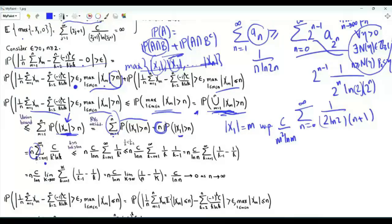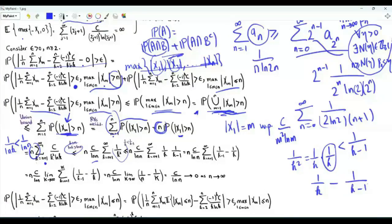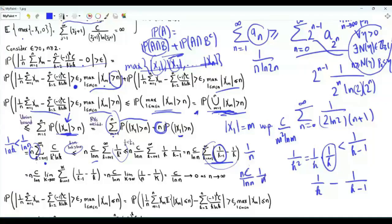Since k > n, we have ln k > ln n, so 1/ln k ≤ 1/ln n, which can be taken outside the sum. Writing 1/k² = (1/k)(1/k) and bounding 1/k ≤ 1/(k-1), the product 1/(k(k-1)) = 1/(k-1) − 1/k gives a telescoping sum equal to 1/n. So the upper bound is nc/(ln n) times 1/n, which is c/ln n. For any positive eta, we can make this term less than eta/2 by choosing n greater than e^(2c/eta).